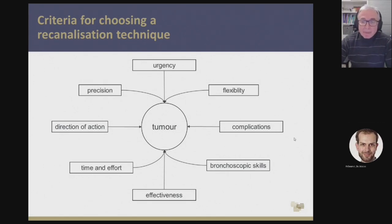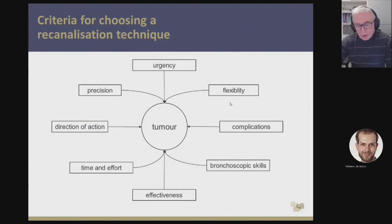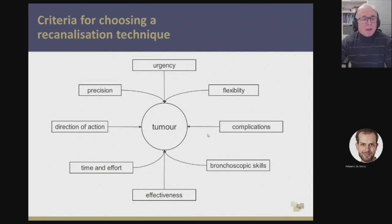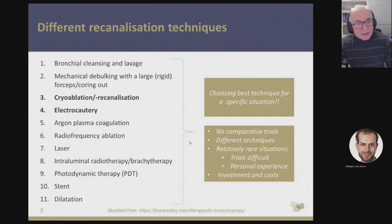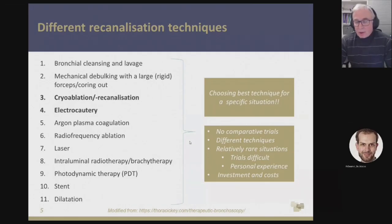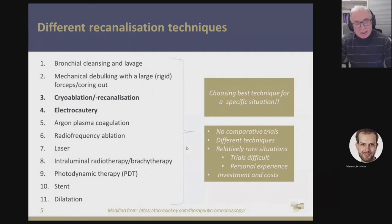Is it difficult to apply? Do we have complications? And how flexible is the probe? With a rigid scope, it's very difficult to reach the upper lobe on the left or right side, or to re-canalize segmental bronchi. So in the following minutes, I will concentrate on two techniques: cryoablation and cryo-recanalization on one hand, and electrocautery — a cold mechanical technique and a hot technique.